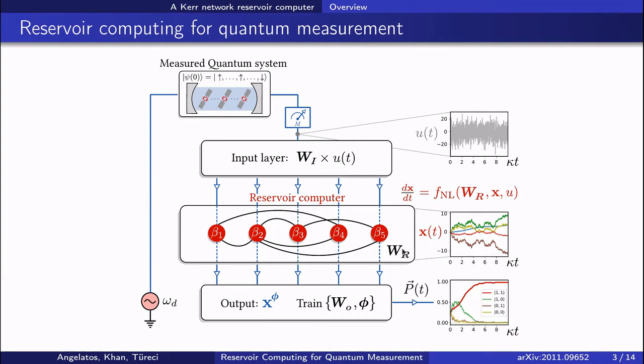In this work, I'll describe networks of two to five oscillators, which can be implemented in current superconducting or optical systems used for quantum computing, and thus the same platform as this quantum system we're measuring. This is a much smaller reservoir than is typically considered, but it is sufficient for a non-trivial measurement task.